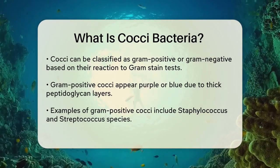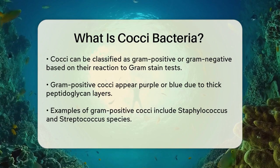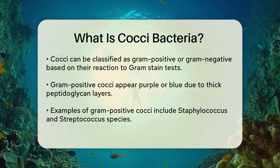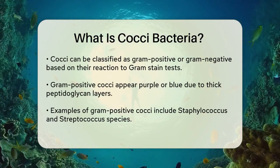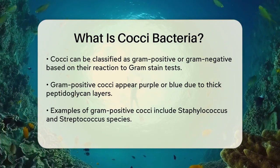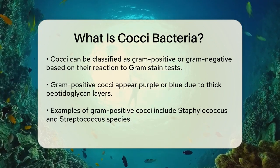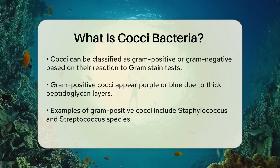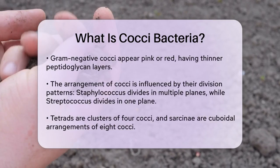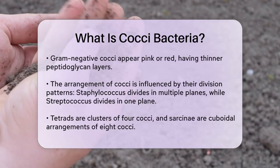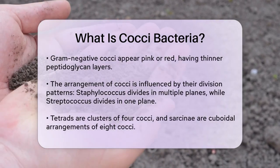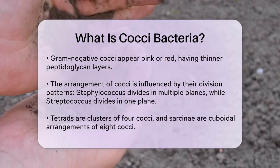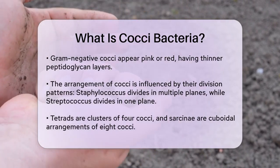Cocci bacteria can be either gram-positive or gram-negative, which refers to how they react to a gram stain test. Gram-positive cocci have thick peptidoglycan layers in their cell walls and appear purple or blue under the microscope. Gram-negative cocci, on the other hand, have thinner peptidoglycan layers and appear pink or red after the staining process.